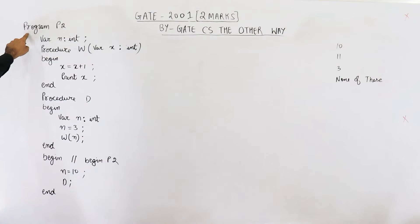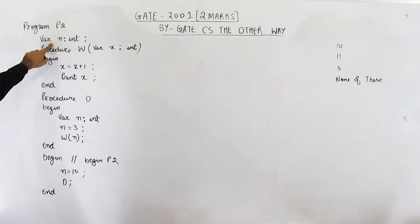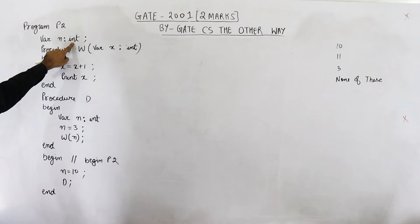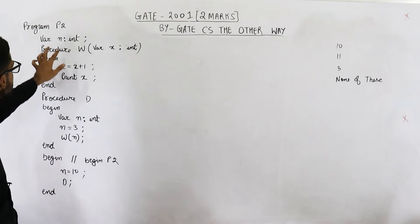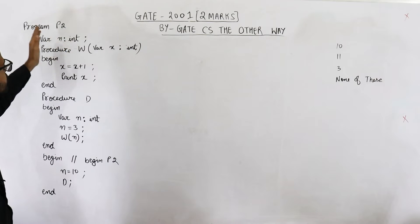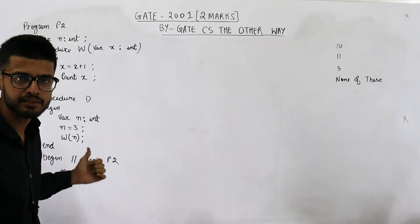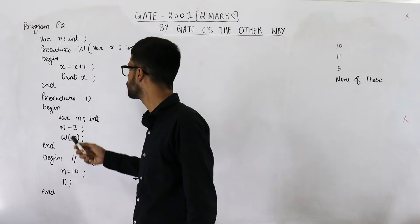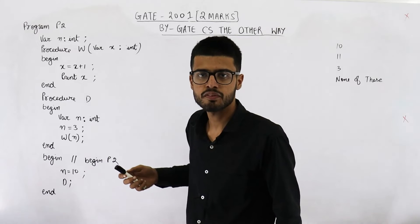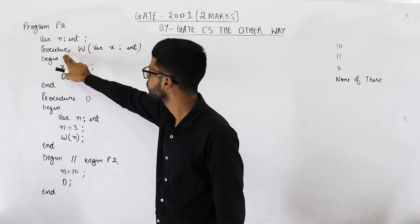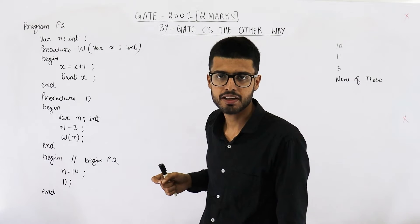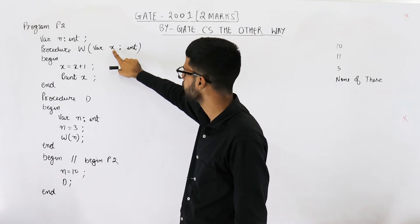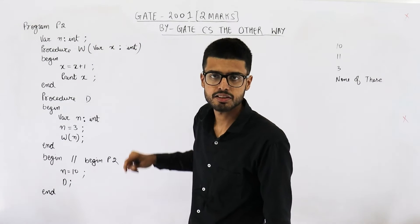This program is named program P2. There is one global variable named n of integer type. This keyword 'var' is used for declaring a variable. How do I know it is global? Because it is not present inside any function, hence it has to be global. Then this keyword 'procedure' is used to define a function. So w is a procedure that accepts one parameter x, which is an integer.